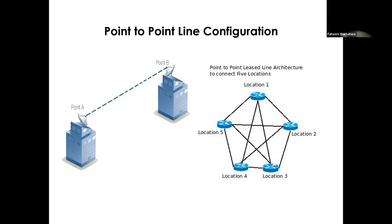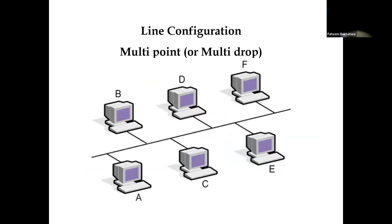There's no sharing in point-to-point — you don't share your link with other devices. Multi-point is where the channel is shared for communication among multiple devices. For example, if machine A wants to send a message to machine B, that message will go from A to every device, traveling along the entire wire or cable, and it's essentially broadcasted. If machine D wants to send a message to machine E, it has to wait for A to finish transmission before it can start.